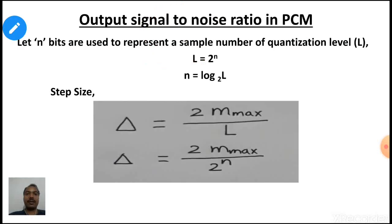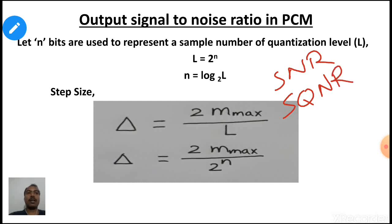Here, noise does not mean additive white Gaussian noise — it is quantization noise. To avoid any confusion, some books do not write SNR; they directly write SQNR, signal to quantization noise ratio. So if you have a problem with SNR, you can also write SQNR.